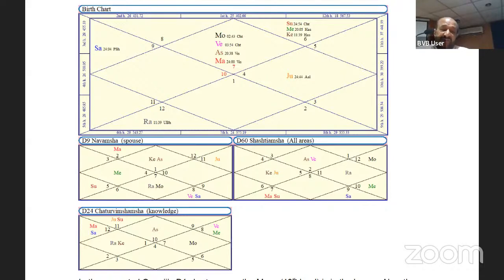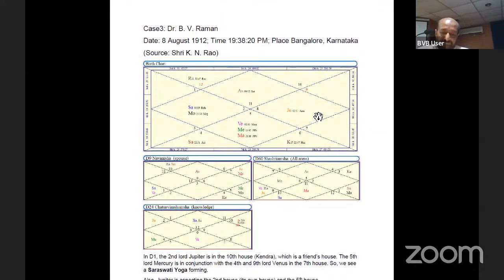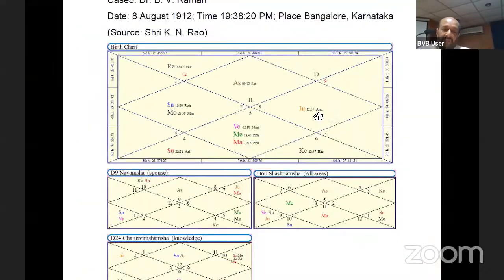So we see that these reiteration is happening in all these charts. For example, if I see this D60 chart, Moon is again in the Lagna, aspecting the fifth house, its own house, while fifth lord Mercury is in the ninth house. So we see the promise getting fulfilled there also.